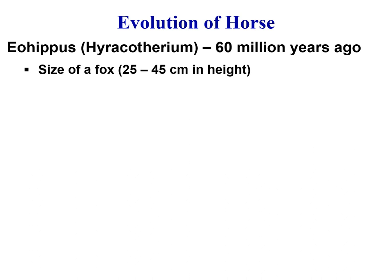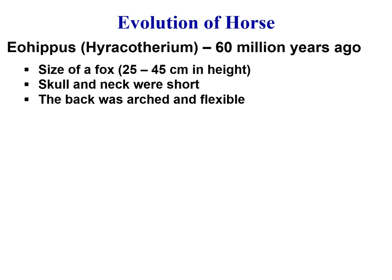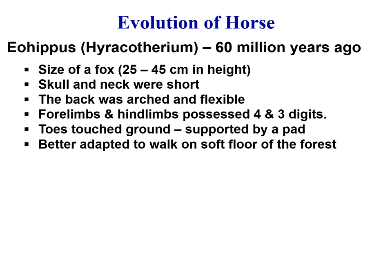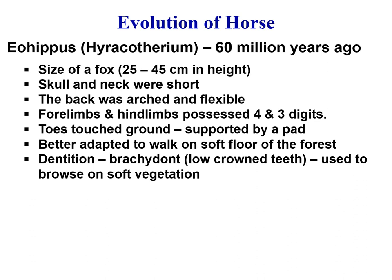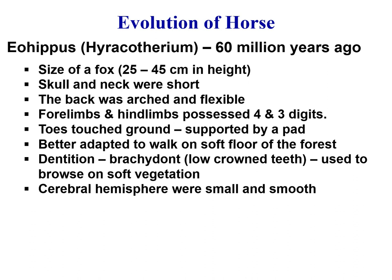Eohippus, which lived about 60 million years ago, was about the size of a fox — 25 to 45 centimeters in height. The skull and neck were short, and the back was arched and flexible. The forelimbs possessed four digits and the hind limbs three, with toes touching the ground supported by a pad. It was better adapted to walk on the soft floor of the forest. The dentition was brachydont — that is, low crown teeth used to browse on soft vegetation — and the cerebral hemispheres were small and smooth.